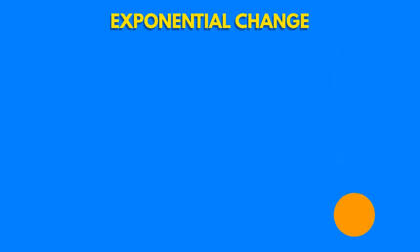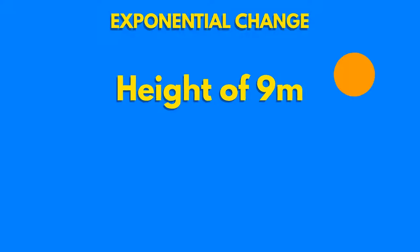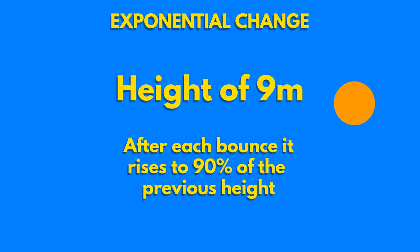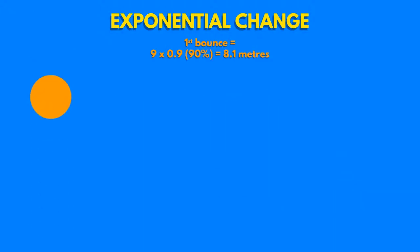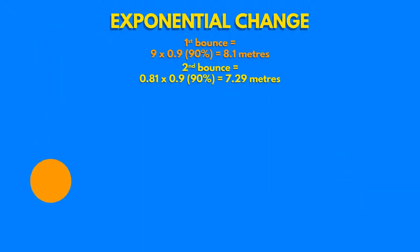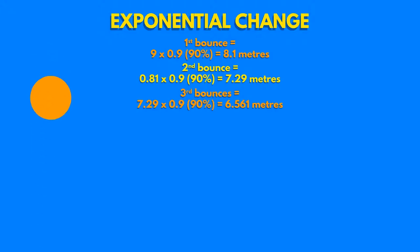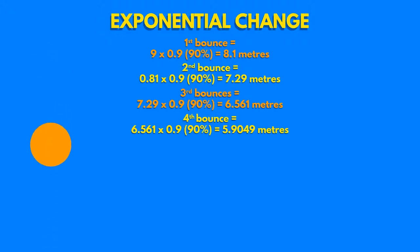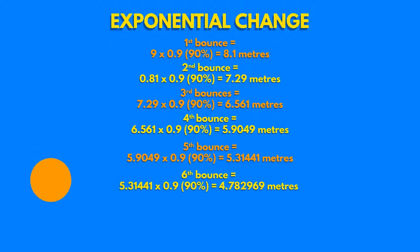You can think of exponential change like this. A ball is dropped from a height of 9 metres. Every time it bounces, it rises to 90% of its previous height. How many times does it bounce before the height is less than 5 metres? Here is the height after the first bounce, then after the second, and the third. Look — the height has finally fallen to below 5 metres, so the answer is 6 times.